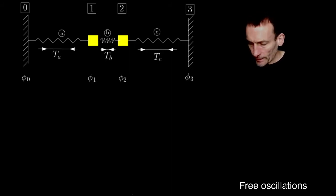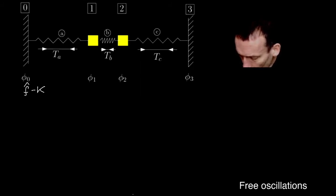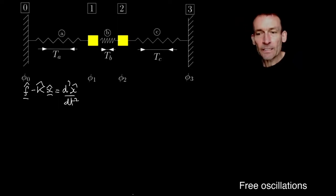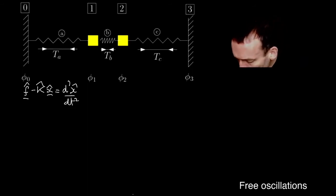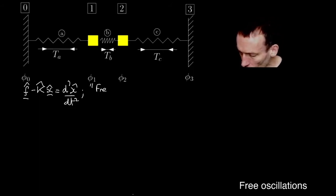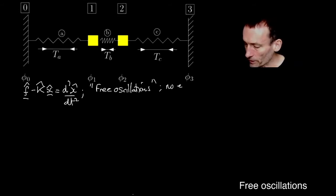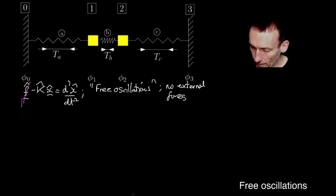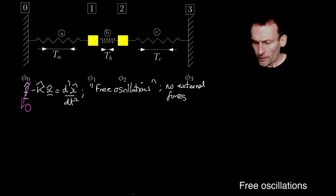We're looking at two masses connected to springs between two fixed walls, and we've reduced the problem to the study of this system — a vector system of second-order differential equations, which happens to be linear because X_hat appears linearly. As a first example, I'm going to consider what I call free oscillations. When I say free, I mean there's no external forces, so I'm going to set F_hat to be zero. That's the first system I'm going to consider.